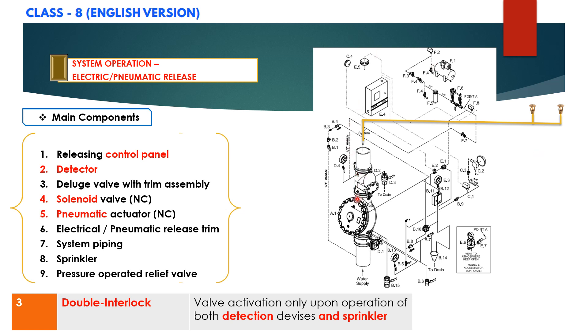The deluge valve clapper opens to allow water to flow into the system piping and alarm devices which are connected will be operated and the pressure switches which are connected to the alarm bells also activate.